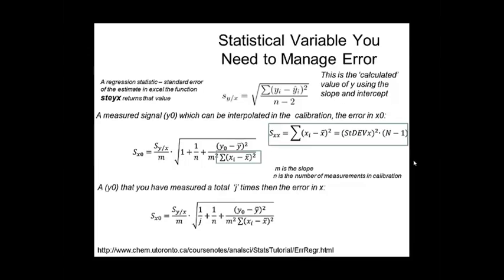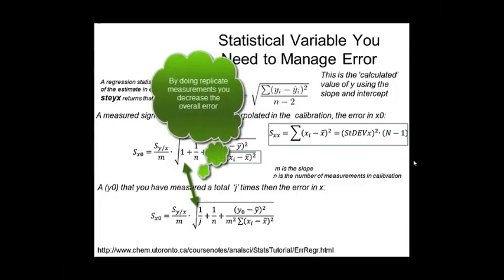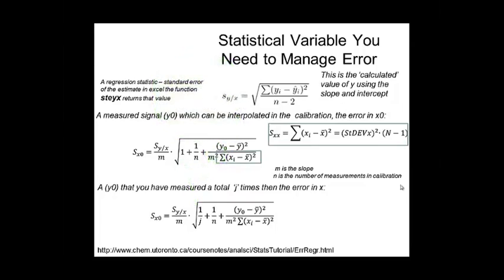One thing I should point out is sometimes you'll do replicate measurements at your unknown. So say you have an unknown sample of lead, you do one measurement, you get one amp out, you might want to do another measurement, and maybe another and another. So if you do replicate measurements of an unknown, the number of times you do that is called j. And then that shows up here, and instead of a one value, which you get if you only take it once, you get a one over j.